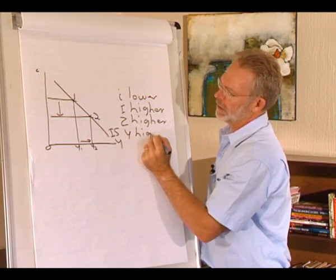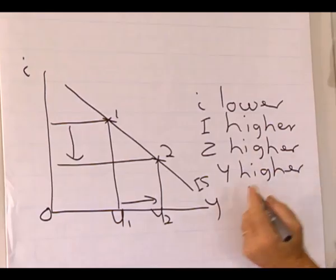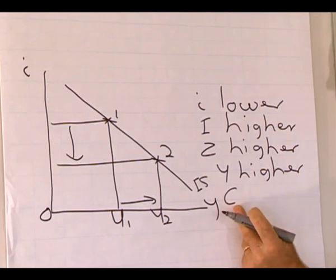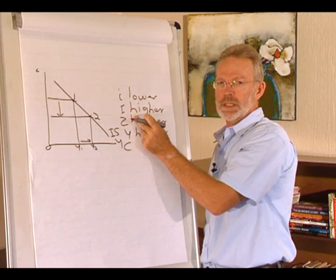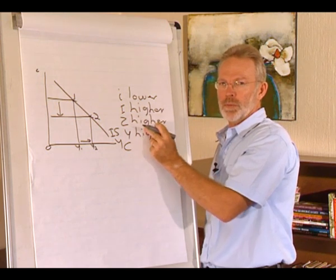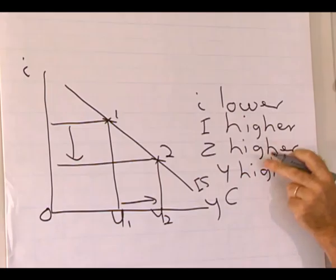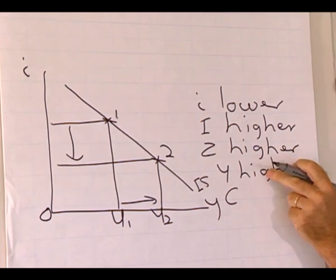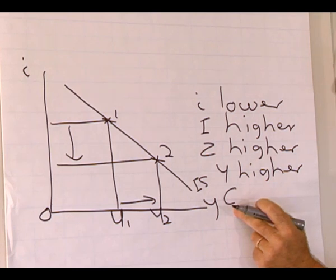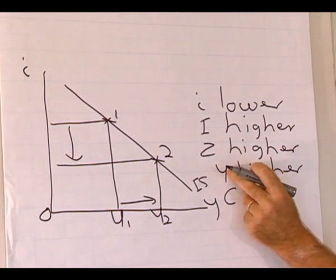So the level of production is also higher. And C, private consumption expenditure. We know the higher demand for goods and services put the multiplier process into motion, leading to the higher level of production. And we know private consumption expenditure is a function of the level of production.